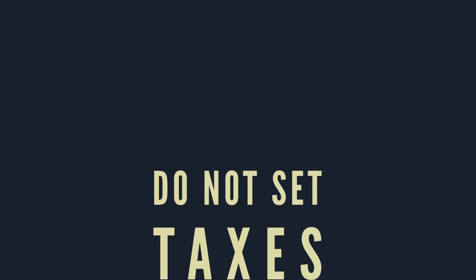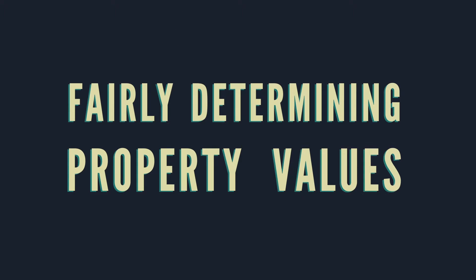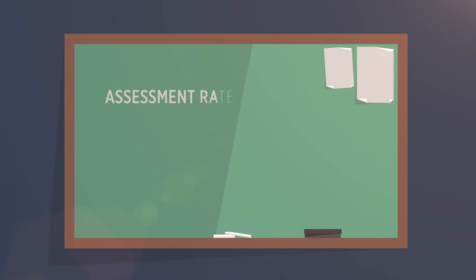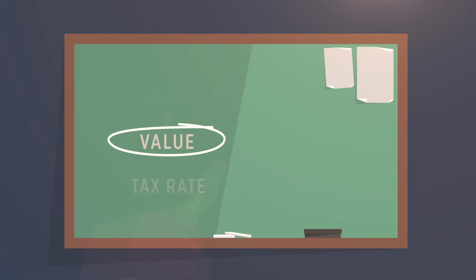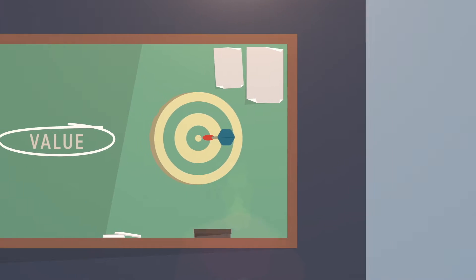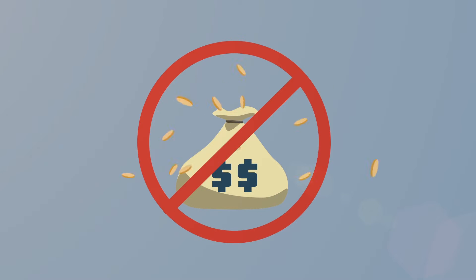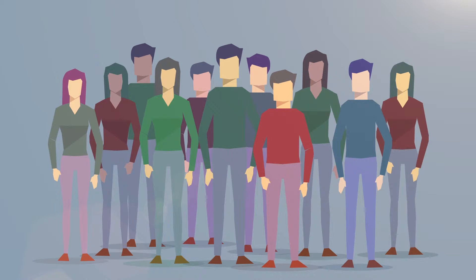Assessors don't set tax rates. Assessors don't chase tax dollars. An assessor is interested in fairly determining property values, and they take great pride in it. Property tax is determined by a simple formula. Assessors only affect one of these variables — the value — and they do so with incredible accuracy. Assessors aren't tax collectors or even tax setters. They're just fellow taxpayers, and their primary goal is to make everything fair and equitable.